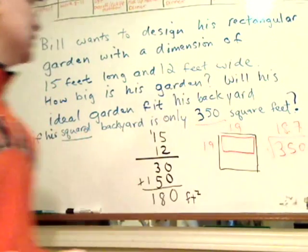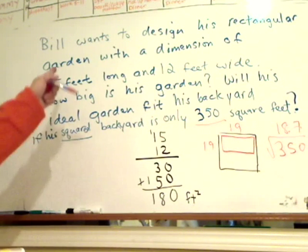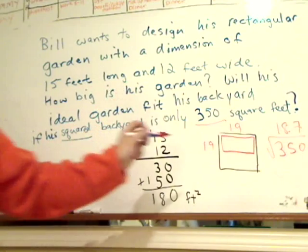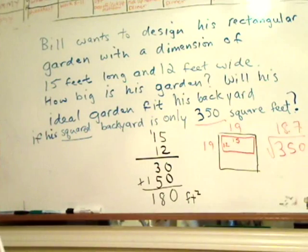So yes, because you know his dimension was 15 by 12. So this is 15 and this is 12, so he could fit his ideal garden in his square backyard.